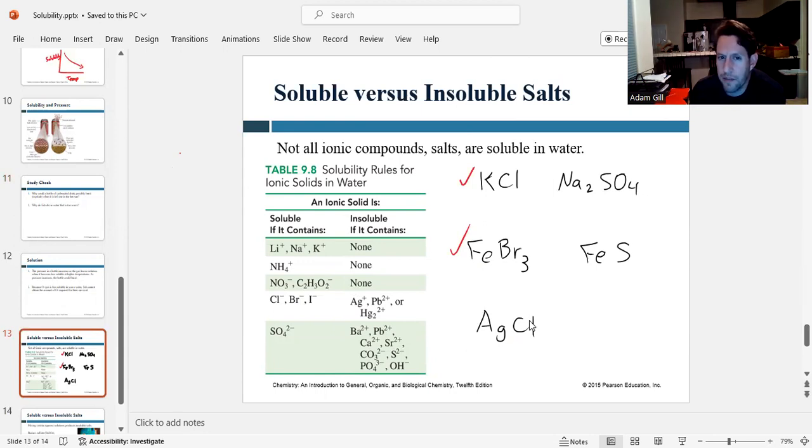Now, what about silver chloride? Anything with chloride is soluble unless it's silver, lead, or mercury. Well, this is silver. So this is not going to dissolve.